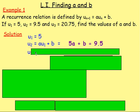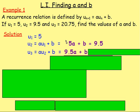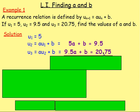Moving on, if you were working out U3, you do A times the previous term, so A times U2 plus B. U2 is 9.5, so it's 9.5A plus B. And we already know U3 is 20.75, so we can replace all of that with 20.75. Looking at this, we have a simultaneous equation — we can easily find out the values of A and B.